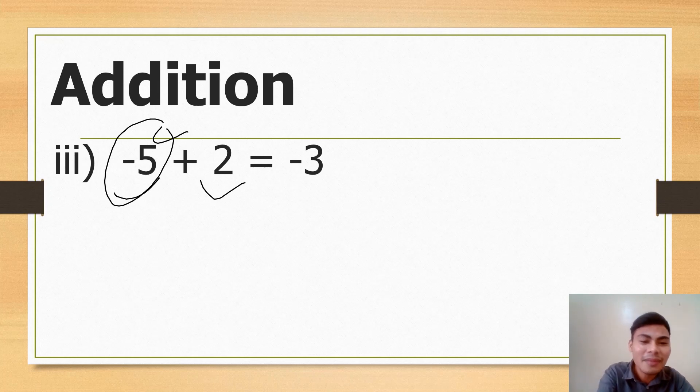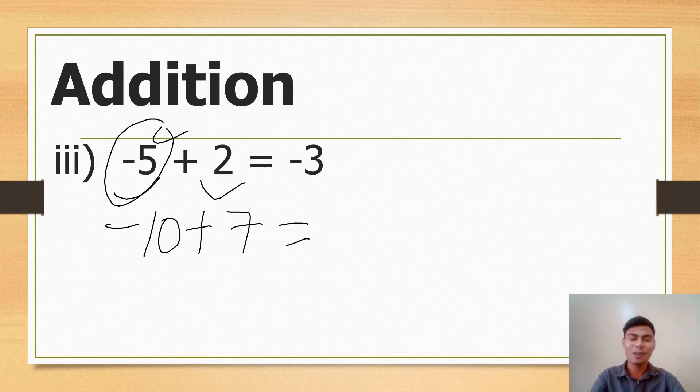So anong gagawin? Then just subtract. 5 minus 2 is 3. Tapos ang nag-hold ng sign na mas malaki ay ang negative 5. So copy the negative. Try this second example: negative 10 plus 7. Again, we are adding different signs. Kung different signs agad, guys, ipasok nyo sa mind nyo na you are to subtract. So subtract the number: 10 minus 7, very basic, 3. Now the question is, what's the sign? So tingnan nyo, si 7 or si 10? Si 10 ang mas malaki, guys. So copy kung ano ang sign ni 10, which is negative. So negative 3.